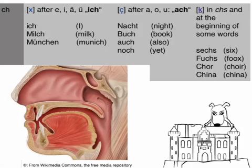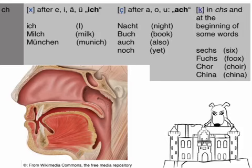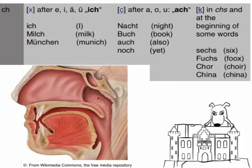We start right away with a complicated concept: the CH sound. There are two or even three different ways of pronouncing it. The most important distinction is between CH and CH. The first pronunciation occurs after the vowels E, I, Ü, and U, and it's called the ich-sound.